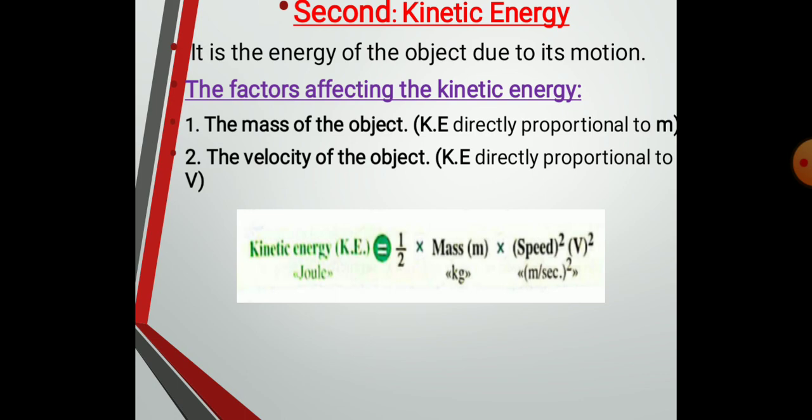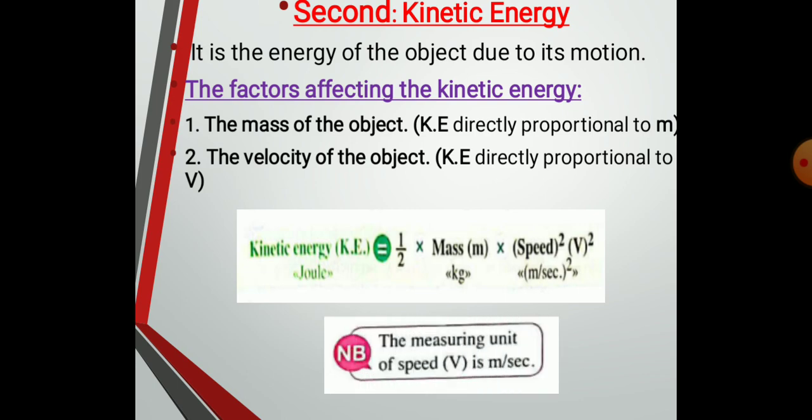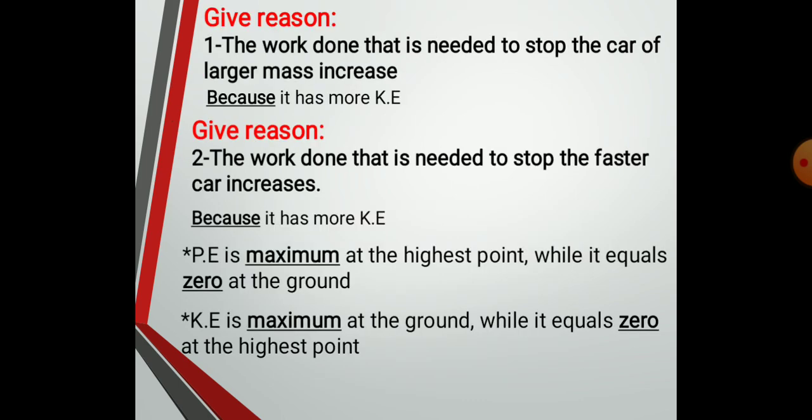About velocity or speed: if two cars of identical mass, and one car is moving faster than the other, the work done needed to stop the faster car increases, because the kinetic energy of a moving object increases by increasing the speed of motion, so the work done to stop it increases. The kinetic energy equals half mass times speed squared. Give reason: the work done to stop the car of larger mass increases because it has more kinetic energy; and the work done to stop the faster car increases because it also has more kinetic energy.